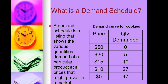At fifty dollars there is basically zero demand for cookies. At twenty dollars there are five demanded. At fifteen dollars there are ten. At ten dollars there are twenty-seven. And at five dollars per cookie, the demand is forty-seven. A demand schedule shows the price and quantity of different goods and how they are actually sold.